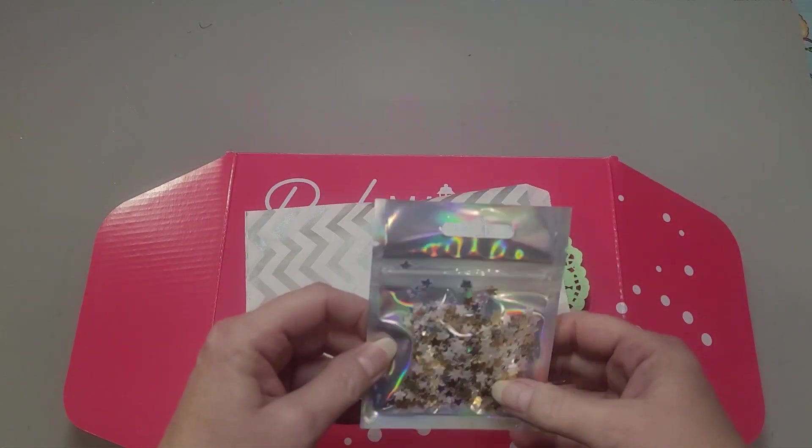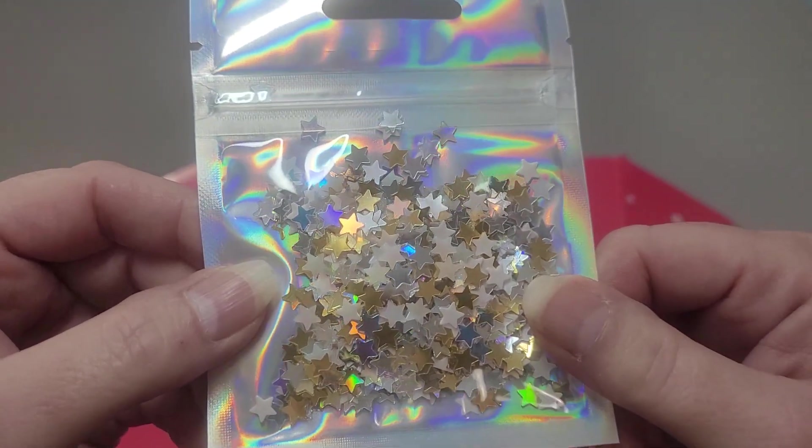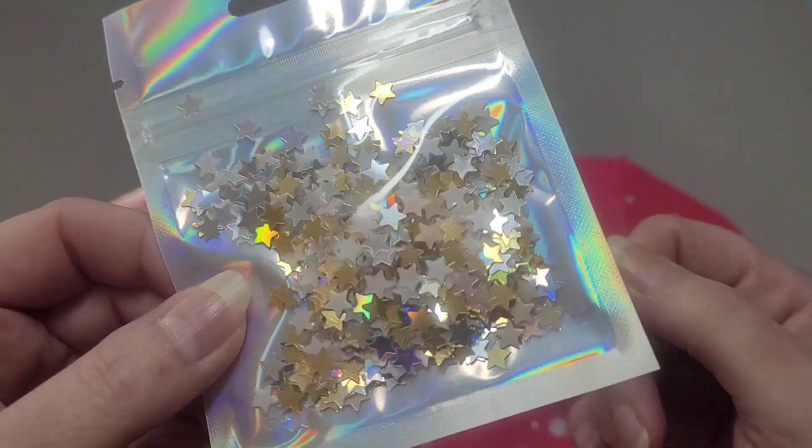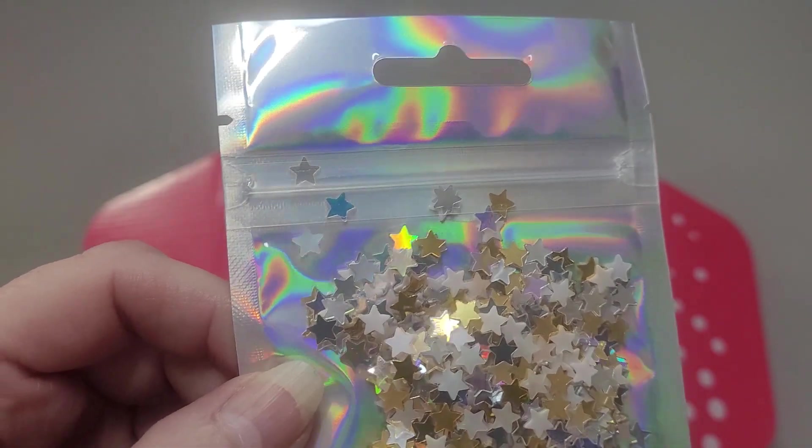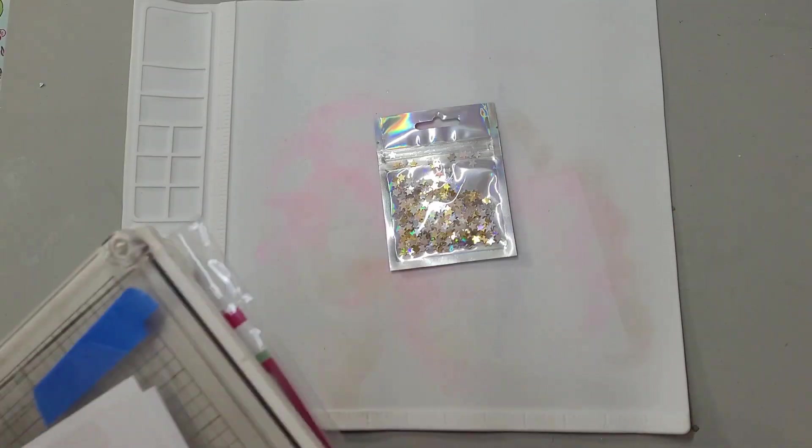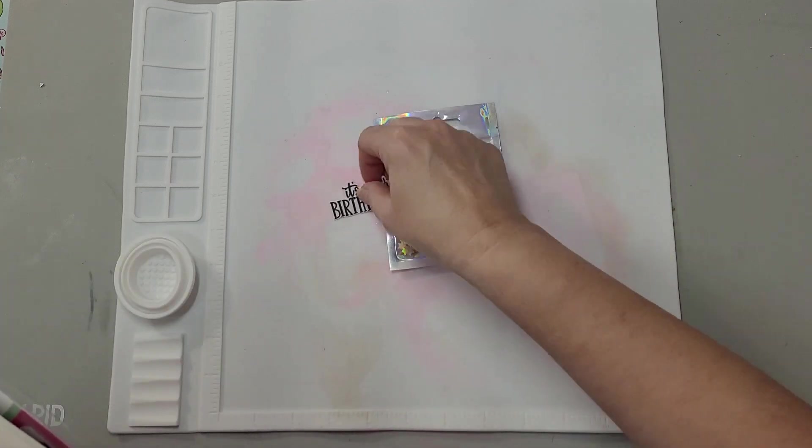It is gold stars for a shaker, so I guess we're making a shaker card. Let me gather my things and we'll get started. So here's the little star shaker bits that was in door number six.